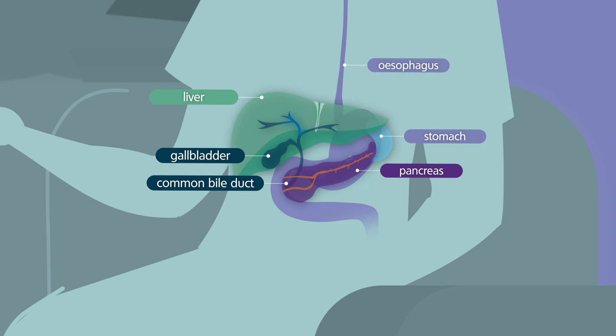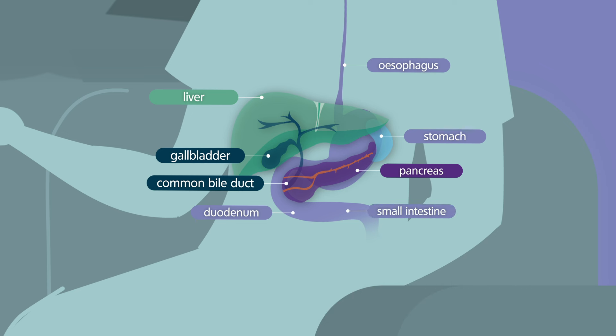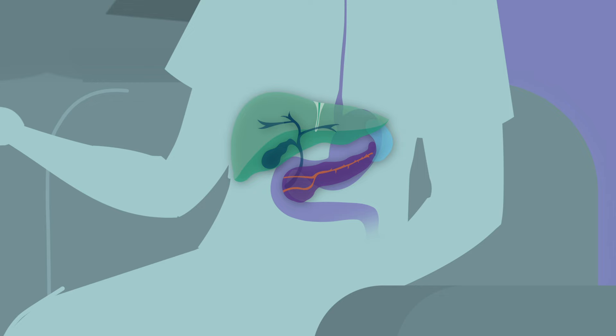Each of these organs plays a vital role in digesting food and fluids, processing nutrients, absorbing energy, regulating blood sugar and filtering waste before passing through the duodenum, the first part of the small intestine. Cancer can occur in any part of these organs when abnormal cells grow out of control.